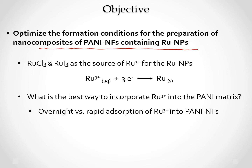We use ruthenium chloride and ruthenium iodide as sources of ruthenium ions to form ruthenium nanoparticles. We are testing overnight and rapid adsorptions for the ruthenium uptake into the PANI nanofibers.